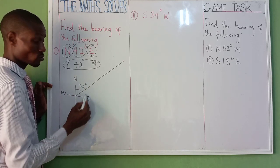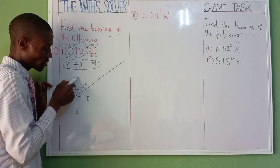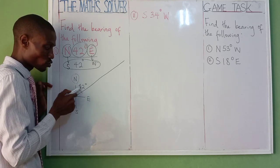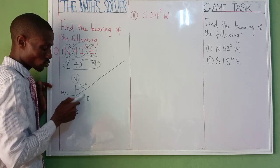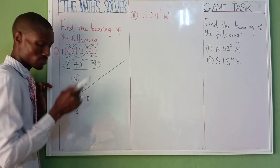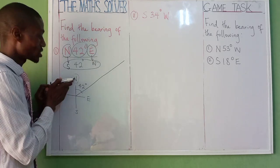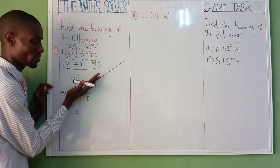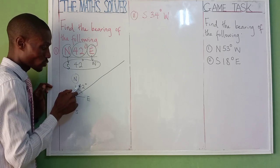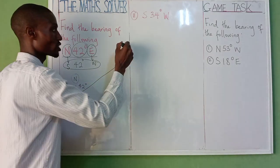You write north first because north is serving — it's not towards east because if it were towards east it would be east that is serving. But here it's north that is serving, so you divide it into two. That gives us north 42 degree east.